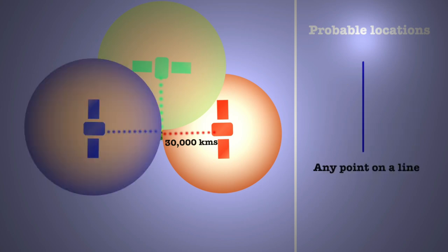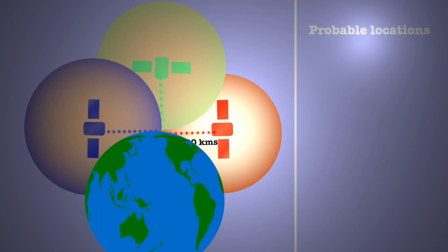Add the third satellite and sphere, and now the probable location goes down to a line. Now we need one last sphere to pinpoint our location. But I said we only need three satellites—the trick is to use the Earth as the fourth sphere. Adding the fourth sphere reduces our possible location to one point, and we have your location.